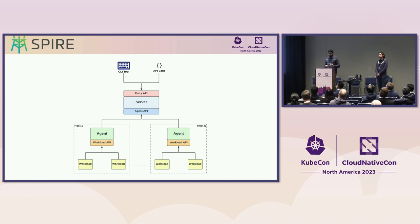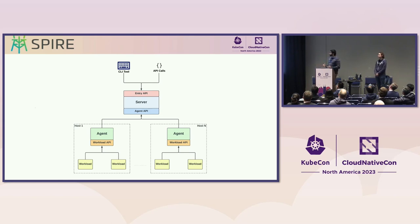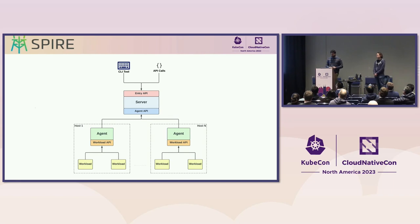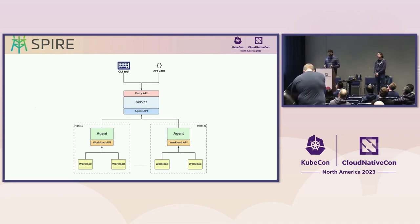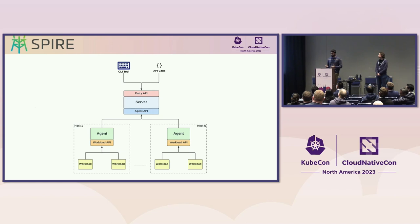Secondly, each SPIRE agent communicates with the server via the agent API. When an agent starts up for the first time, it authenticates to the server via a process called node attestation, during which the server verifies the identity of the node on which the agent is running. Once authenticated, the agent fetches signed workload identities from the server and caches them in memory. And lastly, workloads running on a node communicate with the SPIRE agent via the workload API. Agents gather the selector information for the workload using the workload attestation process and return the workload an identity document from its in-memory cache or by requesting it from the server.